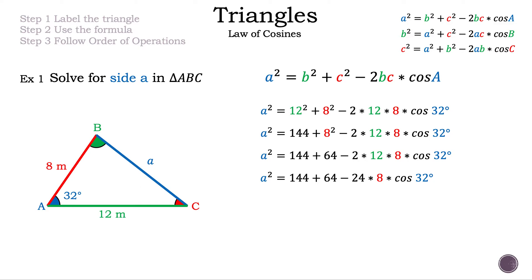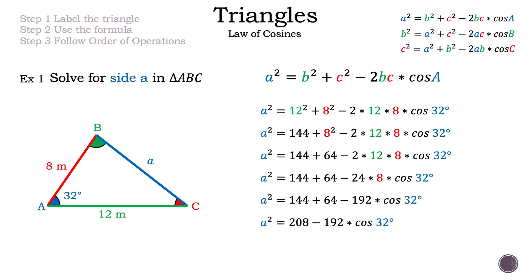Continuing to simplify, 2 × 12 × 8 = 192. So we have A² = 144 + 64 − 192·cos(32°). Adding 144 and 64 gives 208, so A² = 208 − 192·cos(32°). We can't simplify further because 208 and −192·cos(32°) are unlike terms — since we are multiplying by cosine, we can't subtract the integers.